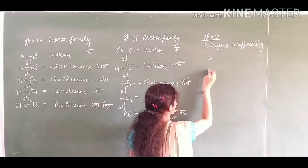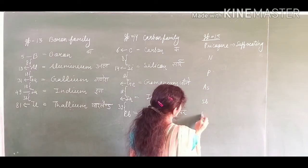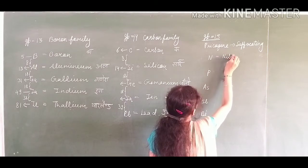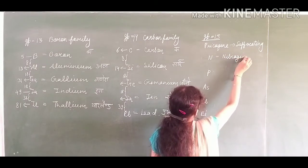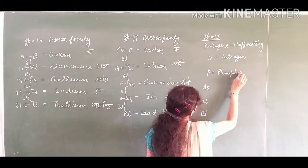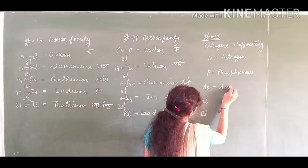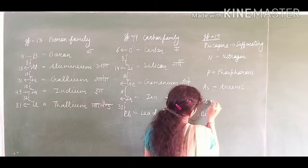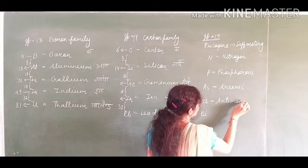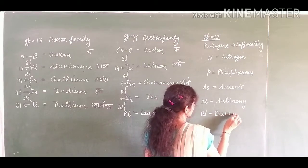Element symbols are nitrogen, phosphorus, arsenic, Sb, Bi. So this is nitrogen, next phosphorus, next arsenic, next antimony, Sb for antimony and Bi for bismuth.